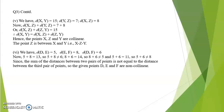We have distance XY equal to 15, distance YZ equal to 7, distance XZ equal to 8. Now distance XZ plus distance YZ is equal to 7 plus 8, or distance XZ plus distance ZY is equal to 15. Therefore, distance XY is equal to distance XZ plus distance YZ.